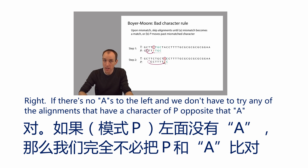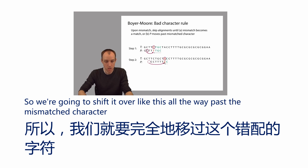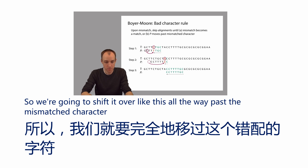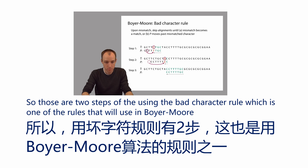There are no occurrences of A within the pattern P, which means we're going to move P all the way past the mismatched character. If there are no A's to the left, then we don't have to try any of the alignments that place a character of P opposite that A. So we shift it all the way past the mismatched character. Those are two steps of using the bad character rule in Boyer-Moore.